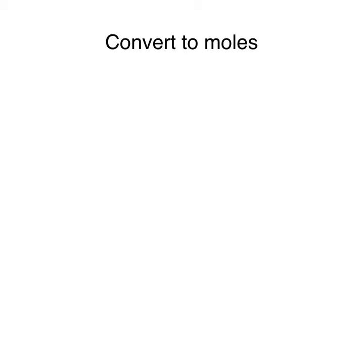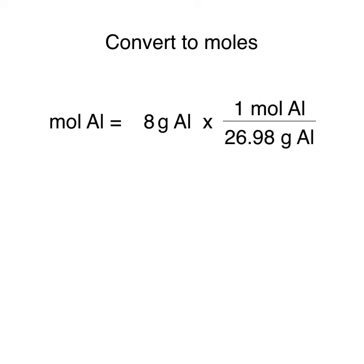We can write that the moles of aluminum is equal to the mass of aluminum divided by its molar mass, which is 26.98 grams. This can be obtained from the periodic table. Doing this, our grams of aluminum cancel out and we're left with 0.2965 moles of aluminum.